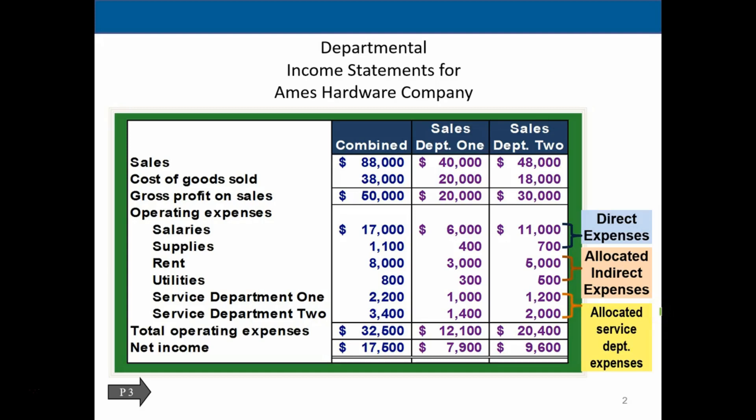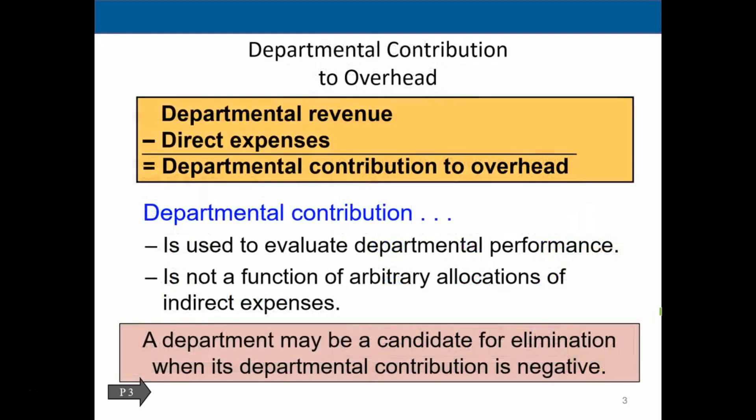This is a handy way to look at things by department because it allocates out all the costs per department. But when we're doing an evaluation, we may want to move this around into a slightly different format. We're going to take the department revenue minus the direct expenses, which would give us the departmental contribution margin. We use this to evaluate the effectiveness of a department, and we should not include allocated amounts because the department generally does not have control over those.